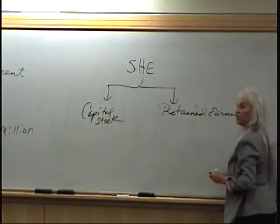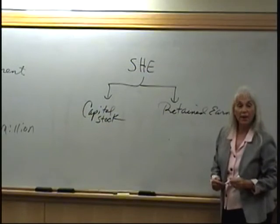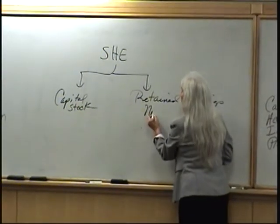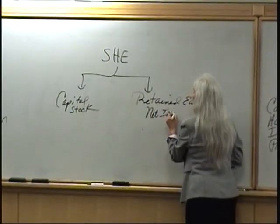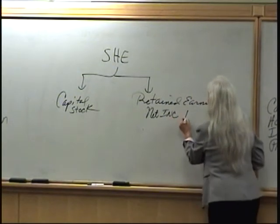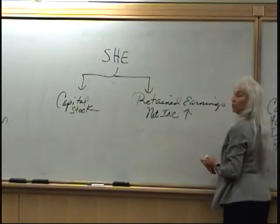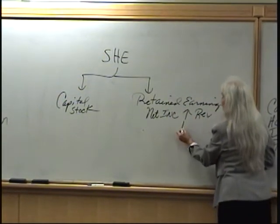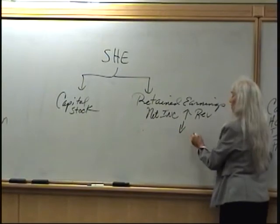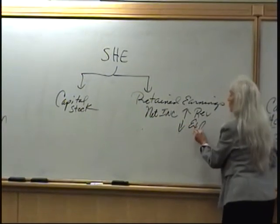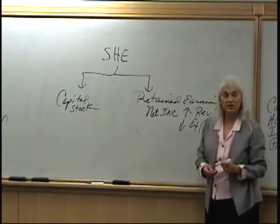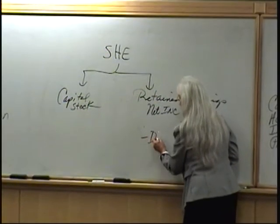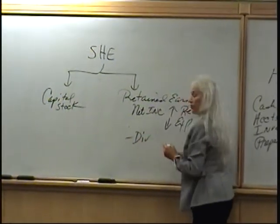What makes retained earnings go up? Net income. What part of net income causes it to go up? Revenue. What part of net income causes it to go down? Expenses. What other thing causes it to go down? Dividends.